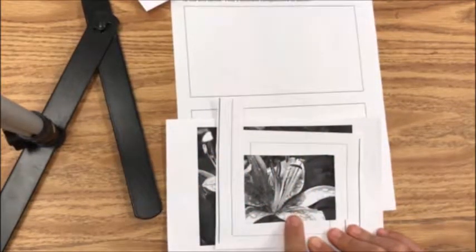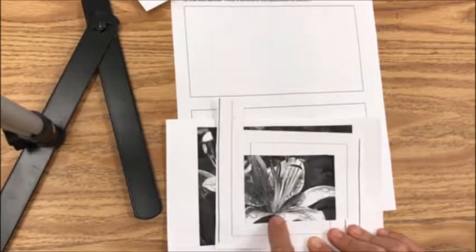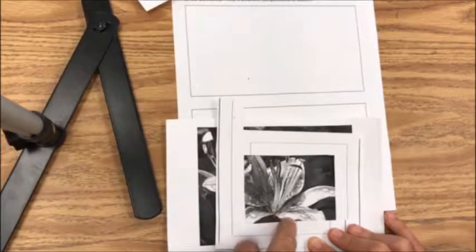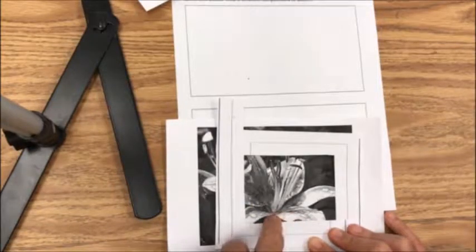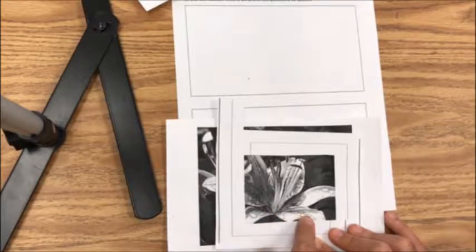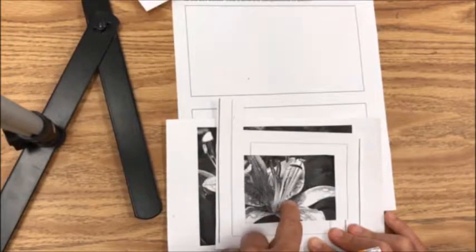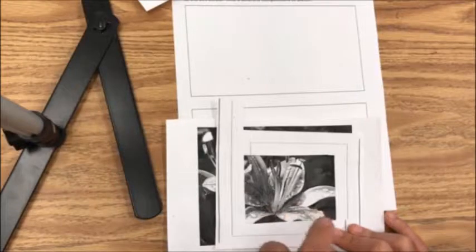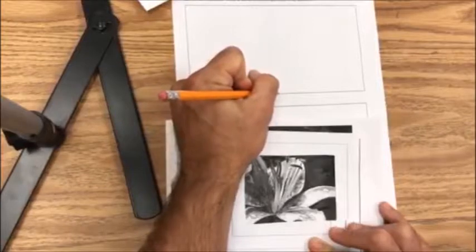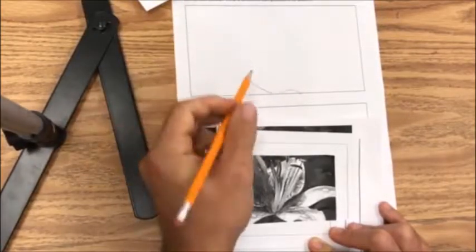Now I'm going to start with the bottom petal. I notice it starts kind of close to the bottom towards the left-hand side. I see a curved line. I like to trace those lines with my fingers to get myself familiar with it. After I've traced it I can go ahead and draw it lightly. Curves down like that.